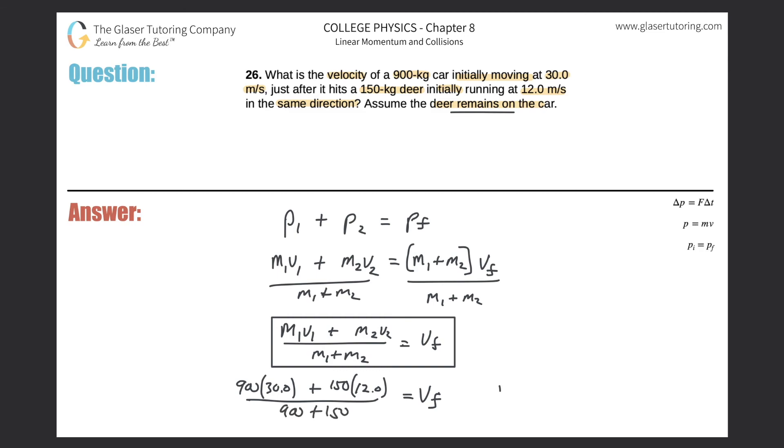So here we get the final velocity being, let's see, 900 times 30 plus 150 times 12, all divided by 900 plus 150.